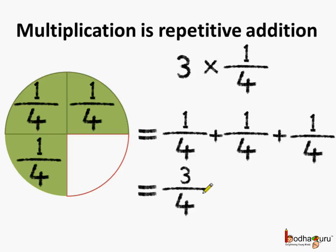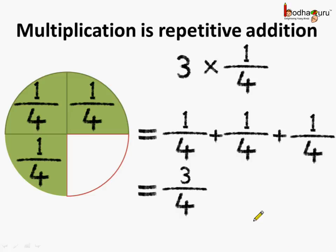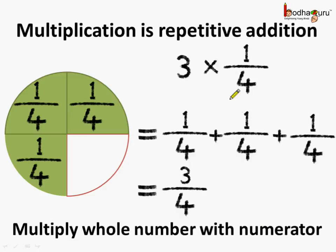So what do we see? 3 times 1/4 is 3/4. In case of fraction multiplication by a whole number, the whole number gets multiplied by the numerator of the fraction. Here, 3 which is a whole number got multiplied by the numerator which is 1, and we got the answer as 3/4.